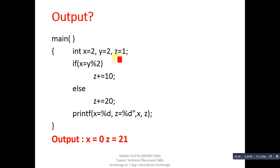X and y are 2 and z is 1. First y modulus 2 will be performed. Y is 2, so 2 modulus 2 remainder will be 0. So x will contain 0.